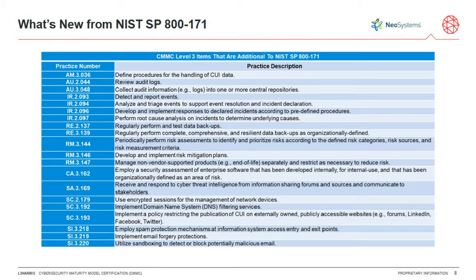The control numbering convention is important. When we talk about NIST 800-171, there were 110 controls; at level three, we're talking about 130 controls. Looking at a control like AU.3.048, the 'AU' indicates the domain — audit and accountability — the '3' means level three control, and '48' is the specific control number. This is the slide to screenshot if you take one: it shows the new control list you need to add to your SSP to bring it up to CMMC Level 3.